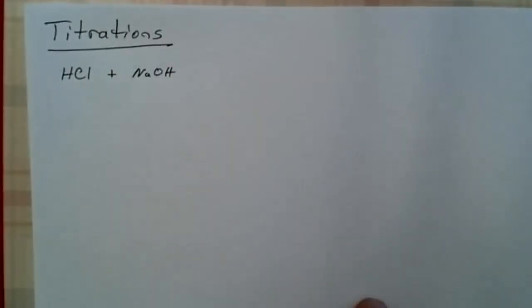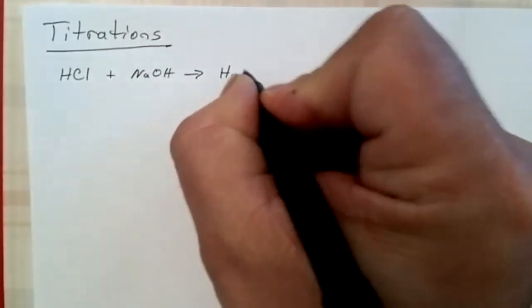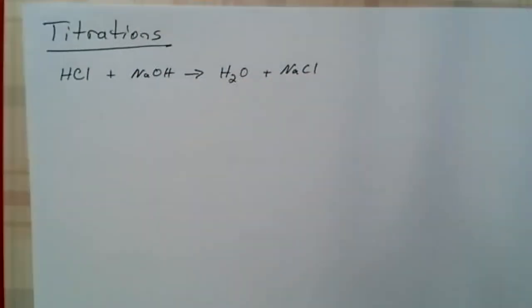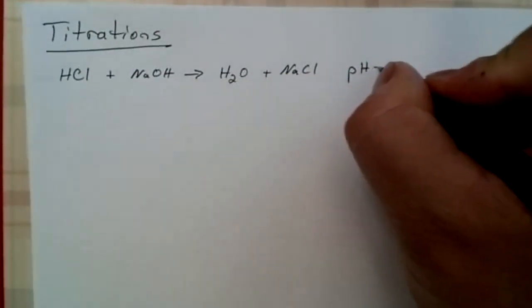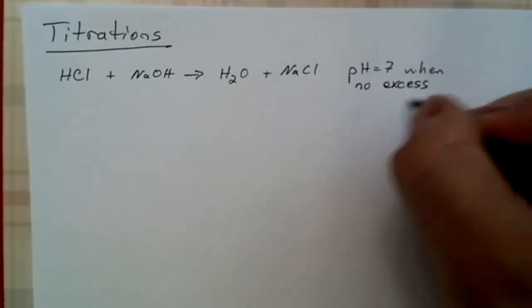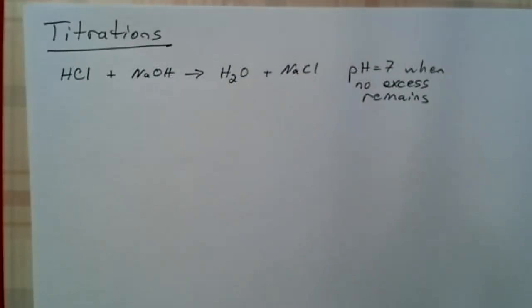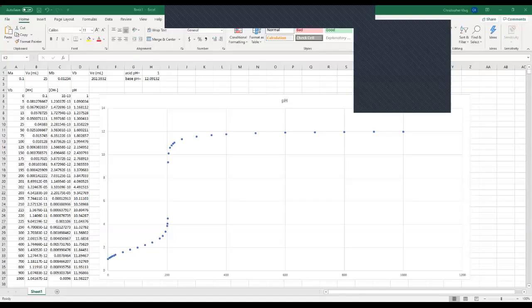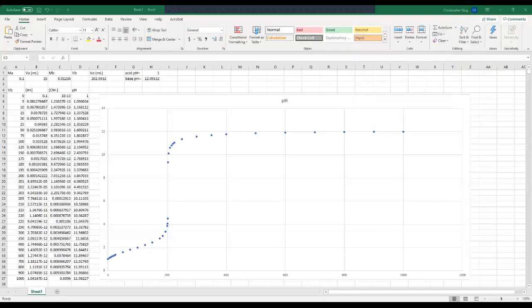Welcome back scholars. This video will be about titrations. As we said in the prior video, if you have hydrochloric acid and sodium hydroxide reacting, those would make water and sodium chloride. You would expect this to be a neutral solution when no excess remains of the reactants. The question becomes, how do you detect when the reaction is complete? To answer this, we need to think about pH and what's commonly called a titration curve.